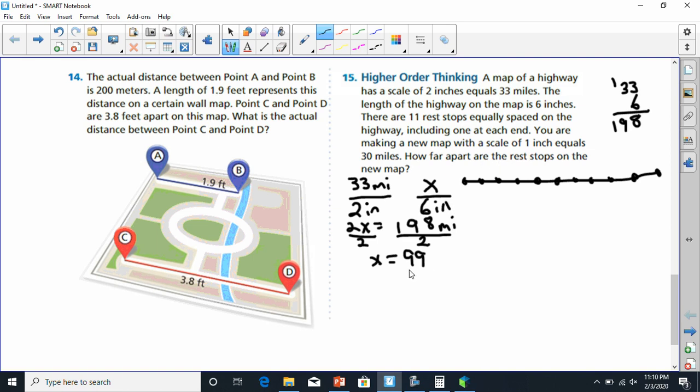Let's divide 99 by 10. That's going to give us 9.9. So this is 9.9 miles in between.